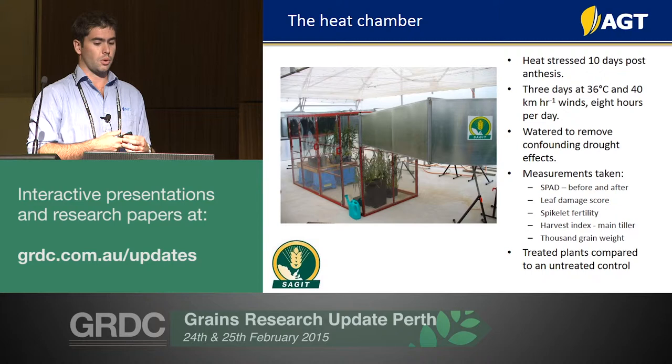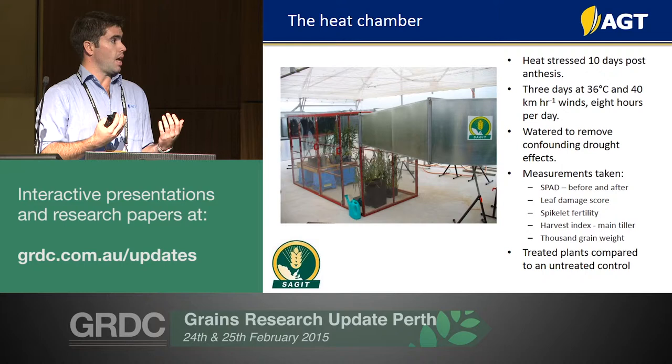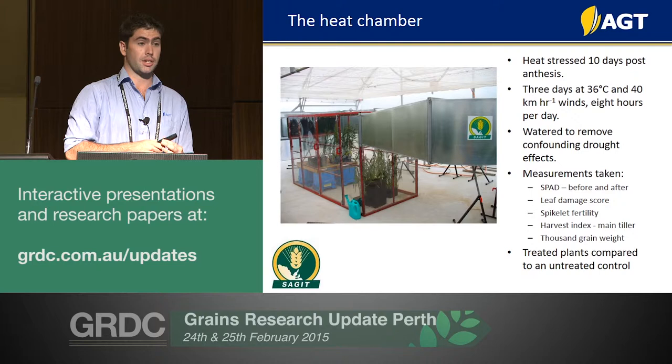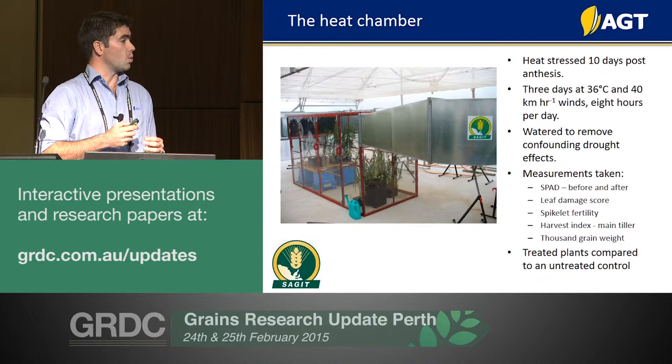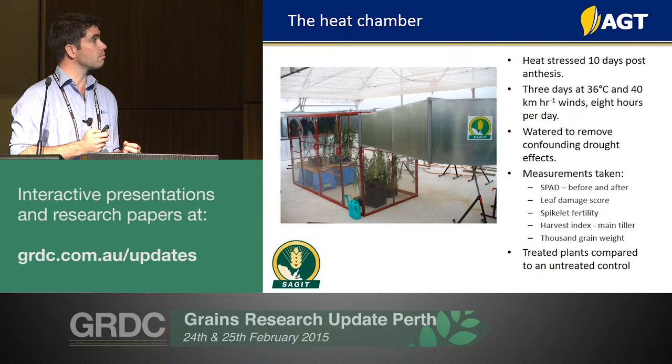We take a whole range of measurements and compare them to an unstressed control. We measure leaf chlorophyll, leaf damage including senescence and haying off, spikelet fertility in a similar fashion to what was described in the frost talk, and also 1,000 grain weight to assess effects on grain size.